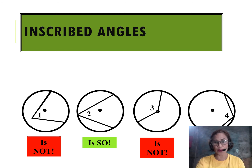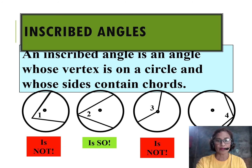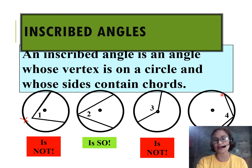The next type of angles are what we call inscribed angles. An inscribed angle is an angle whose vertex is on the circle and whose sides contain chords. Number 1 is not an inscribed angle because its vertex is not on the circumference — for it to be inscribed, its vertex should be on the circle. Number 2 is a perfect example of an inscribed angle since it is formed by two chords and the vertex lies on the circumference.